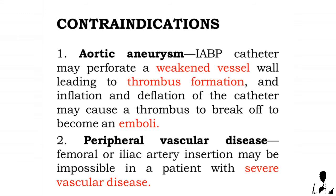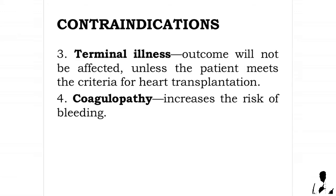Contraindications: one, aortic aneurysm — the IABP catheter may perforate a weakened vessel wall leading to thrombus formation, and inflation and deflation may cause a thrombus to break off and become an embolus; two, peripheral vascular disease — femoral or iliac artery insertion may be impossible in patients with severe vascular disease; three, terminal illness unless the patient meets criteria for heart transplantation; and four, coagulopathy, which increases the risk of bleeding.